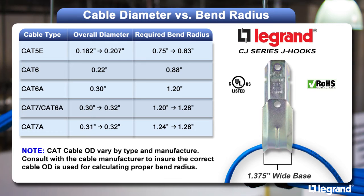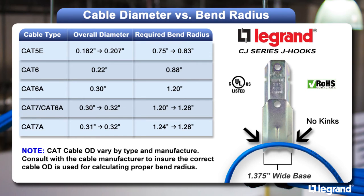For instance, the minimum bend radius of a CAT-6A cable with an outer diameter of 0.3 inches should have a minimum bend radius of 1.2 inches. Use a cable support that has a base wide enough to inherently maintain the minimum bend radius of your cable. Cablofil's CJ Series J-hooks have a wide base support and beveled edges that maintain a minimum bend radius of 1.375 inches.